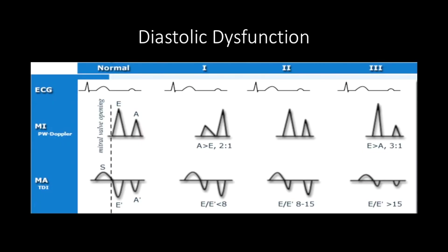There are 3 grades of diastolic dysfunction. Starting with normal diastolic function, the tracings seen for pulse wave Doppler and TDI will serve as our baseline for comparison. The E and E' waves represent filling associated with left ventricular relaxation, while the A and A' waves represent filling associated with atrial contraction.